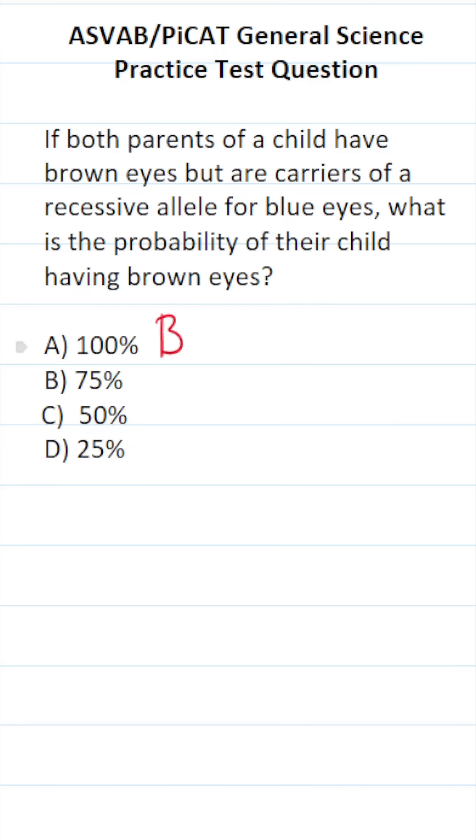I'm going to say big B represents brown eyes and little b represents blue eyes. Since blue eyes is a recessive allele, for a child to have blue eyes, they would have to have the genotype little b, little b.